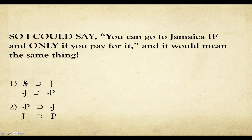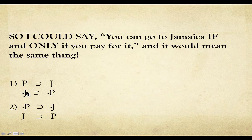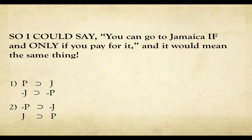You're either going to pay for it and go, or you're not going to pay for it and you're not going to go. You're getting both or doing neither. So you can say 'if and only if,' you can say 'both or neither,' or you could have two separate statements — one that says if you pay for it you can go, and one that says if you go, then you pay for it.